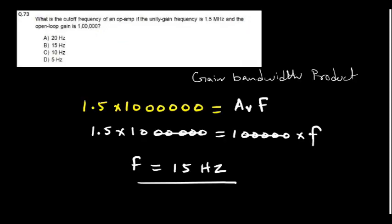What is the cutoff frequency of an op-amp if the unity gain frequency is 1.5 MHz and open-loop gain is 100,000? This uses the gain-bandwidth product: 1.5 MHz = gain × frequency. Using the same equation, we can find the cutoff frequency — it works out to 15 Hz.